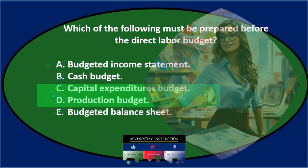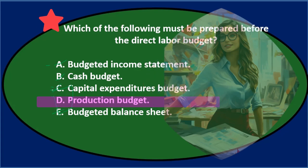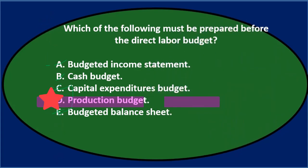We're left with our final answer: D. Which of the following must be prepared before the direct labor budget? D, the production budget.